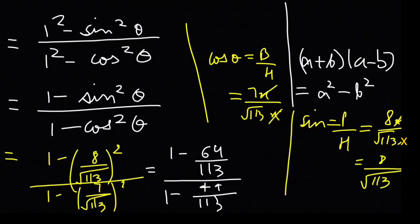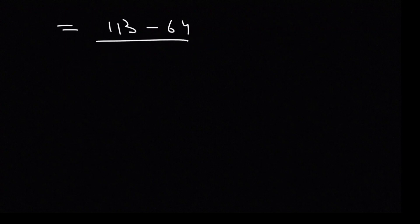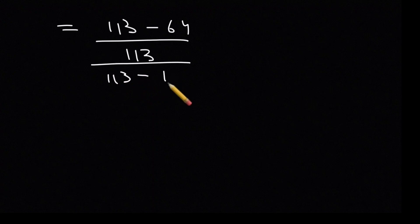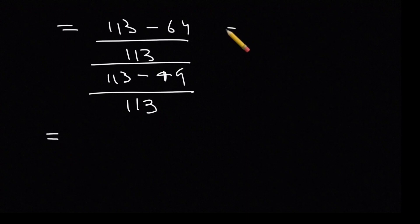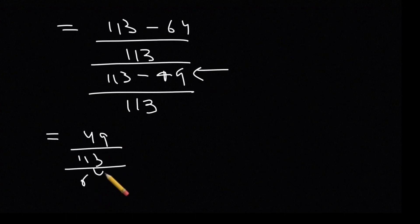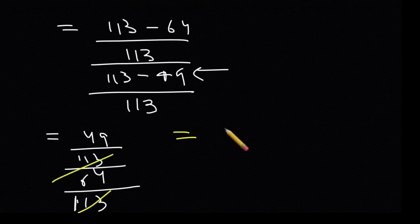I hope aapko itna samaj aaya hai, aap solve kar sakte ho. So solving further: (49/113) upon (64/113) — the 113s cancel — so you get 49 upon 64 as your answer for the first part.